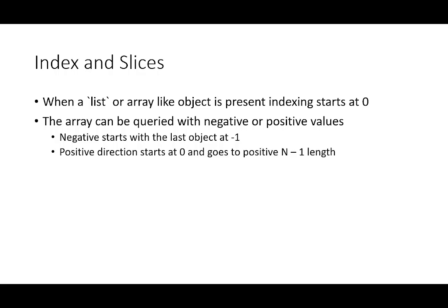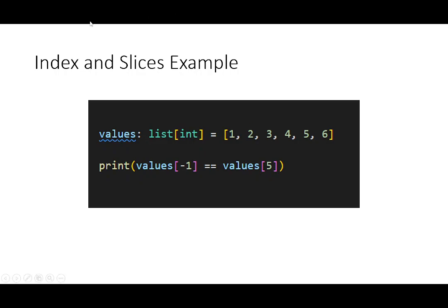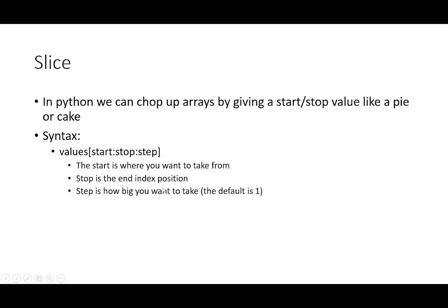Let's take a look at some stuff. We're going to talk about indexing and slicing. When you have a list or an array object, it starts at zero. You're probably familiar with that. Arrays can be queried with negative or positive values. If you want to get the last object in an array, you can use negative one. Or in the positive direction, you can start at one and go to length n minus one, because you start at zero, not one. Let's look at an example. Here we have a list, one through six. We want to get the last value. We can show that the negative one value is actually the last value six, and it'll print true.